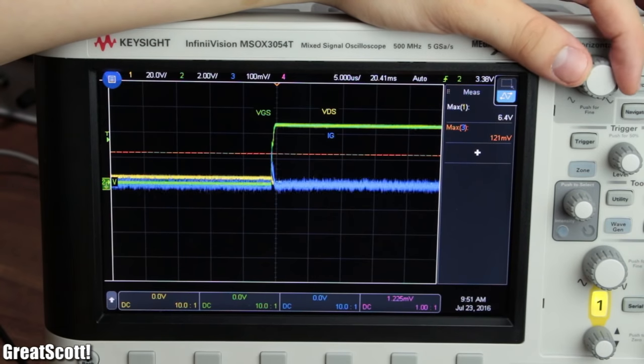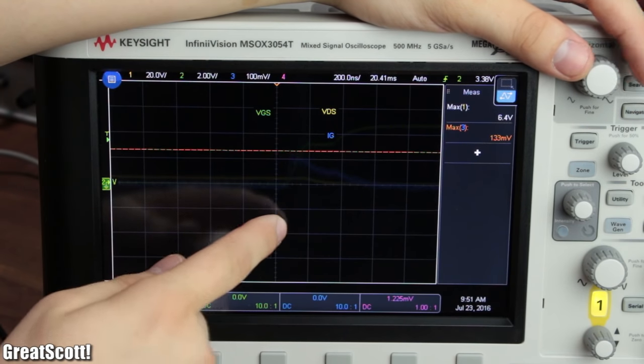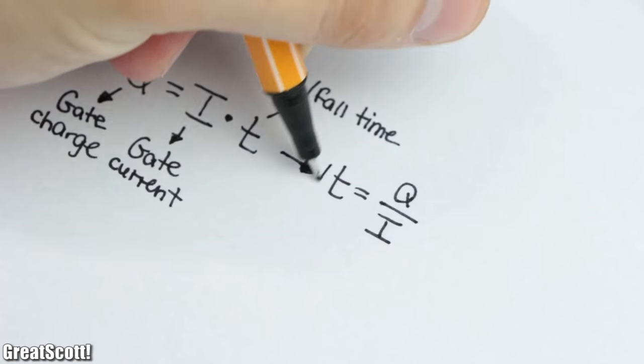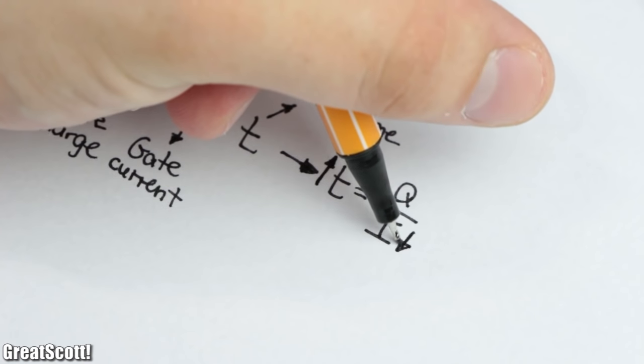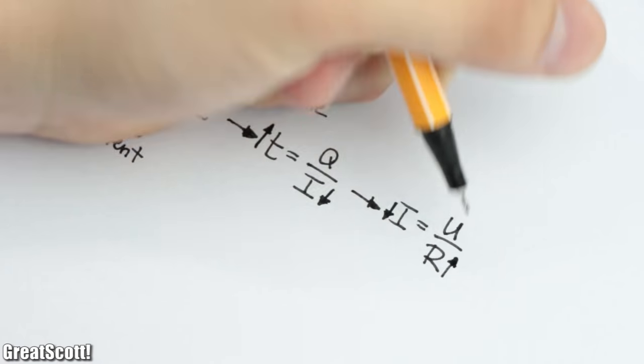Because when turning on a MOSFET, it is not only about the voltage at the gate but also about the charge. And with a constant gate charge, we can increase the rise and fall time by simply decreasing the gate current. And for that we can use a simple resistor.